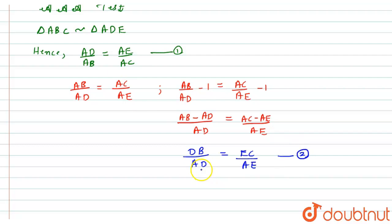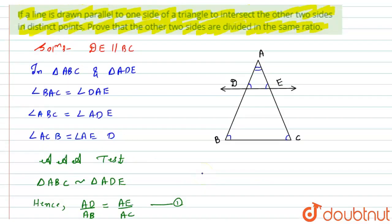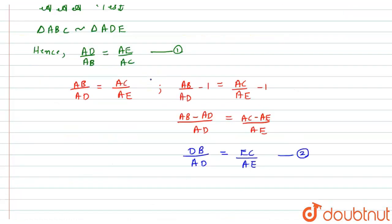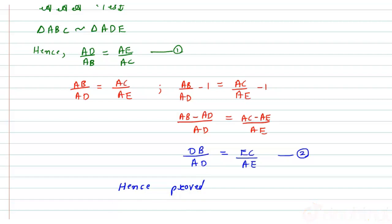From equation number one and equation number two, we can conclude that if there is a line parallel to one side of a triangle and intersecting the other two sides, then the sides which were intersected are divided in the same ratio. Hence it is proved.